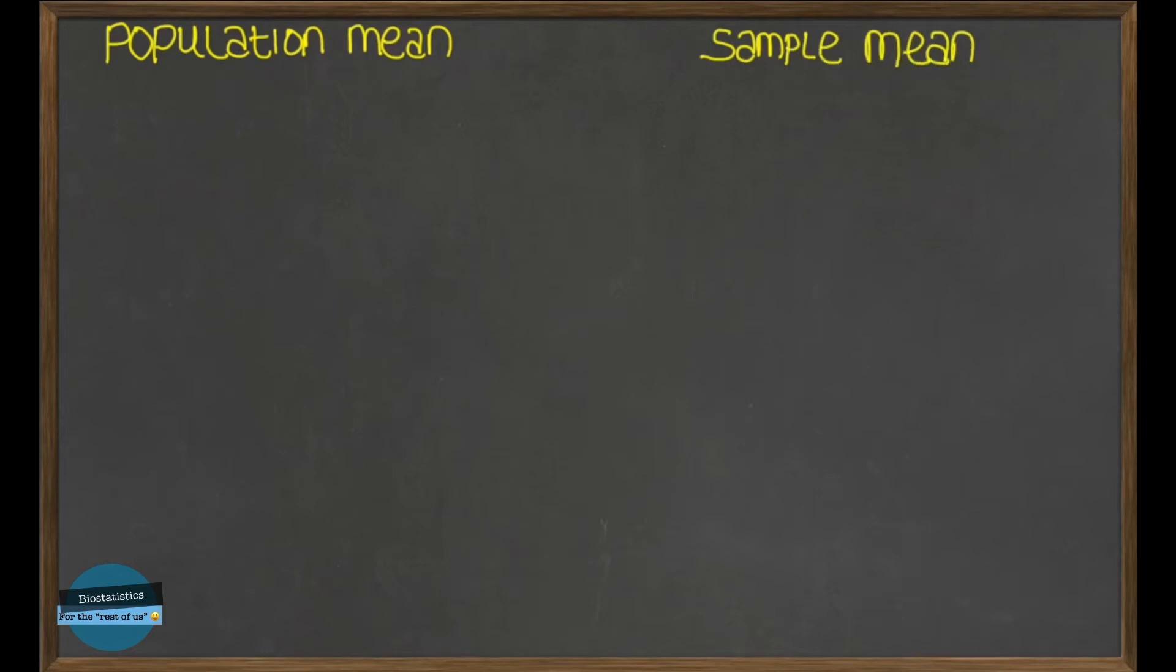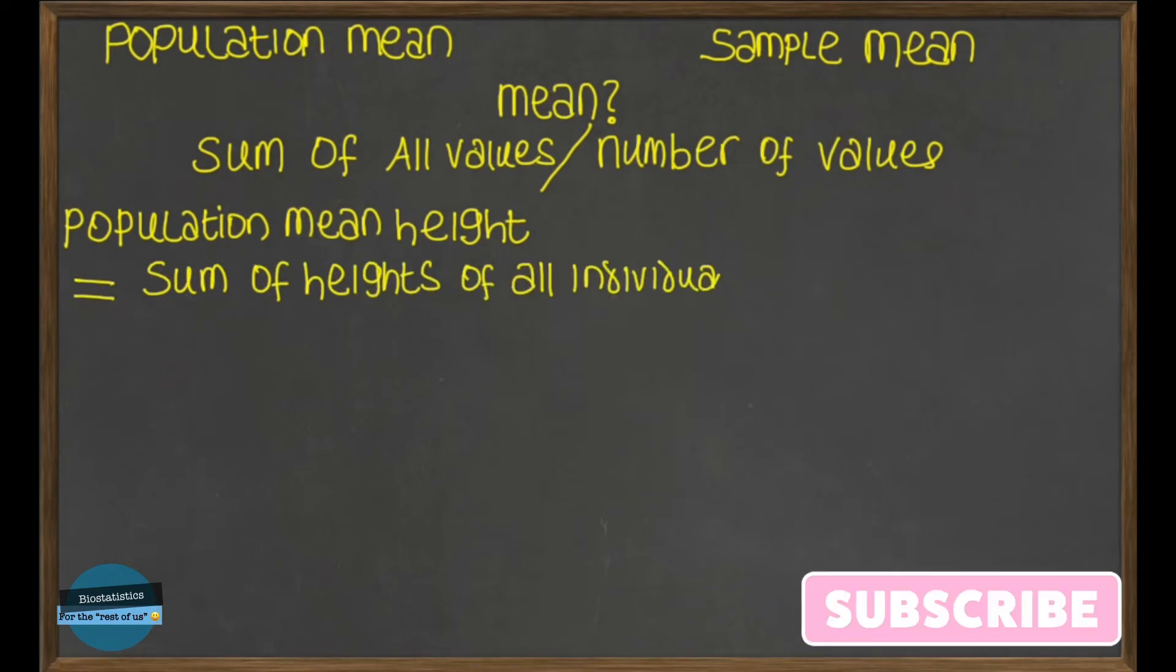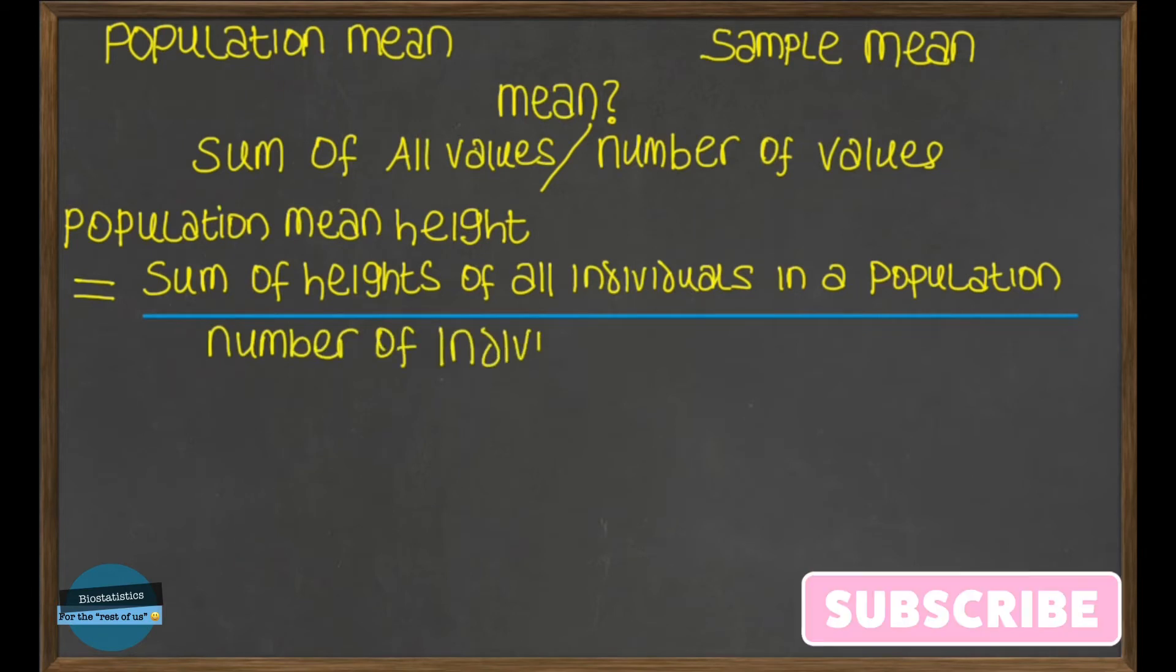To start with, what do we understand by the term mean? The mean is simply the sum of all the values divided by the number of values. So for data that has not been grouped into a frequency distribution, meaning raw data, the population mean height is simply the sum of all the heights of the individuals in the population divided by the number of individuals in that population.